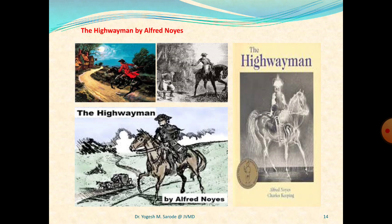Noyes makes use of several poetic techniques in 'The Highwayman'. These include but are not limited to alliteration, metaphor, and enjambment. Alliteration occurs when words are used in succession or at least appear close together and begin with the same sound. This technique appears numerous times throughout the poem. For example, 'landlord', 'leaped' and 'love' in the last lines of stanza three of part one.